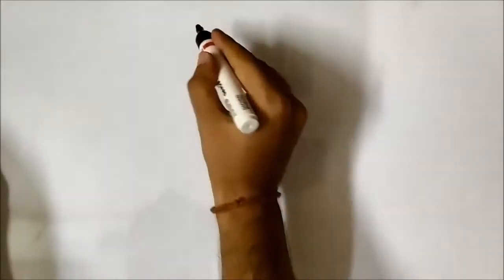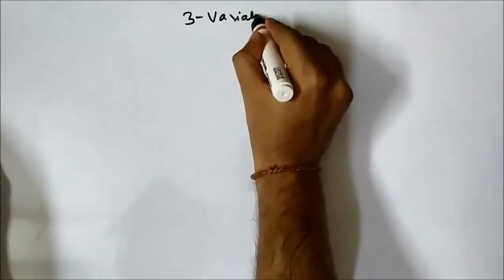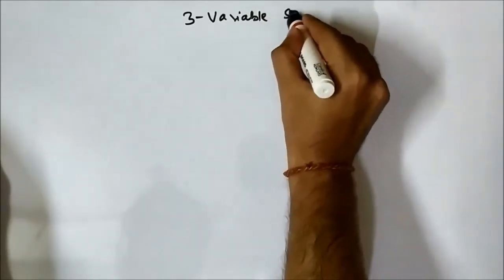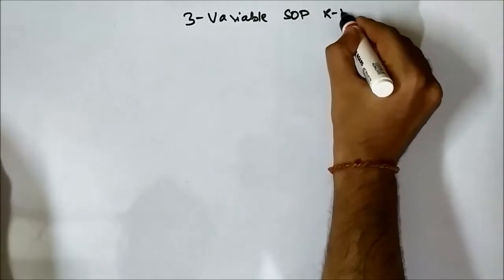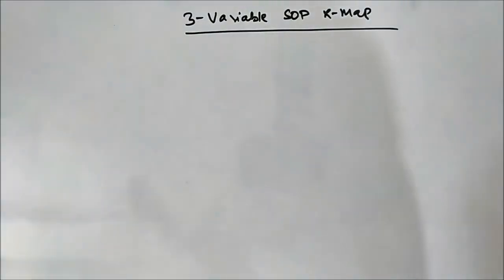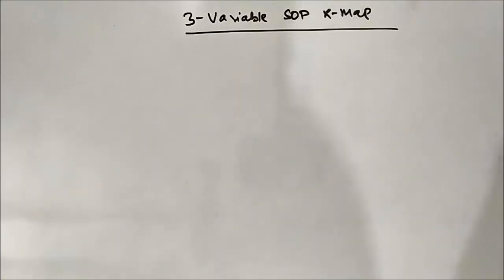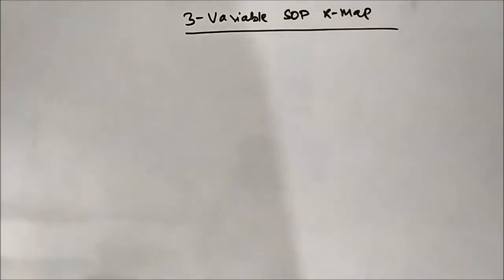We have discussed about two-variable SOP K-map. Now we will discuss about three-variable SOP K-map. I have divided the whole discussion in terms of SOP and POS because if I mix both of them it will be a little bit difficult. So let us first discuss all things related to SOP — sum of products — then we will go to POS.